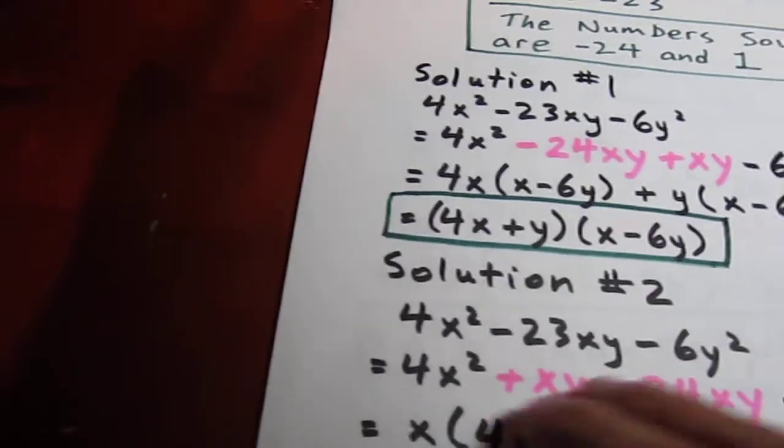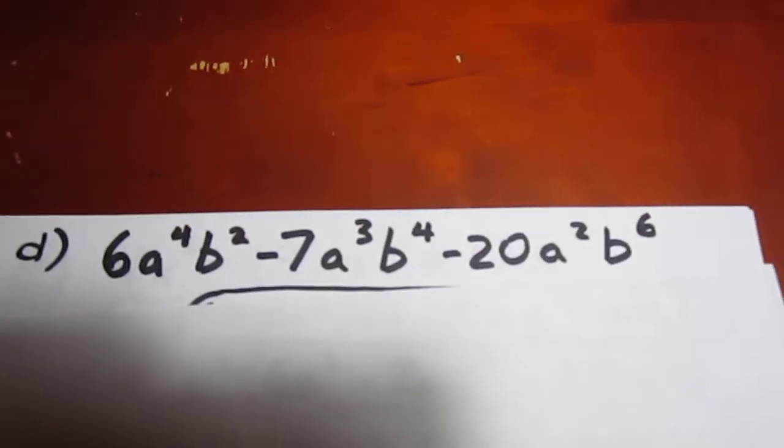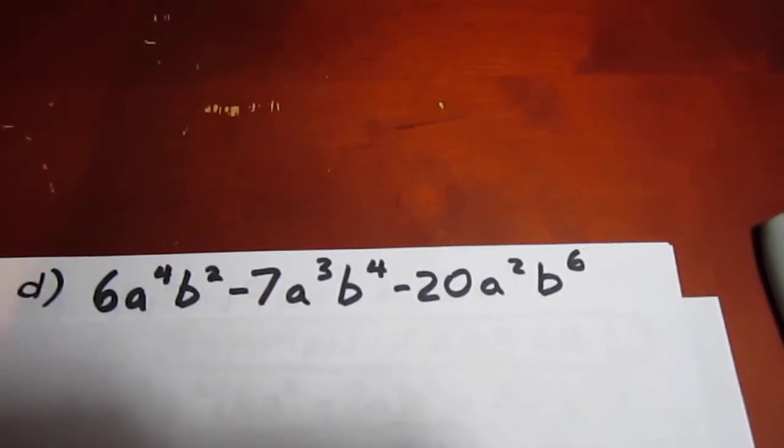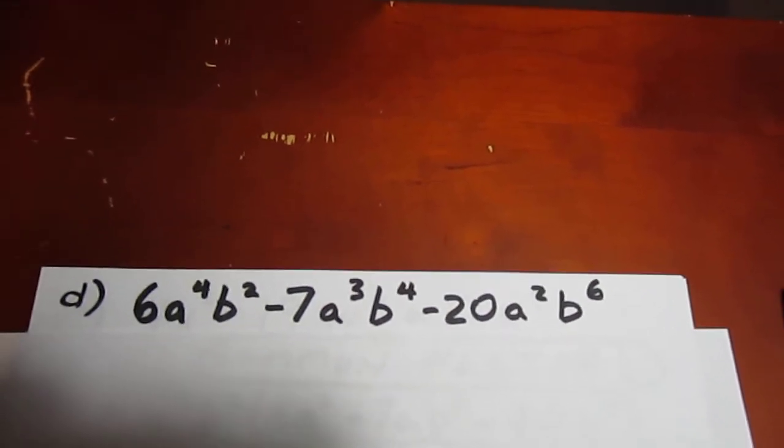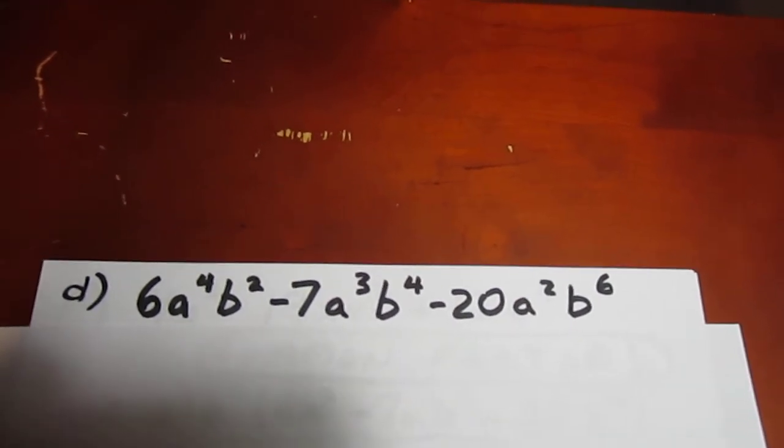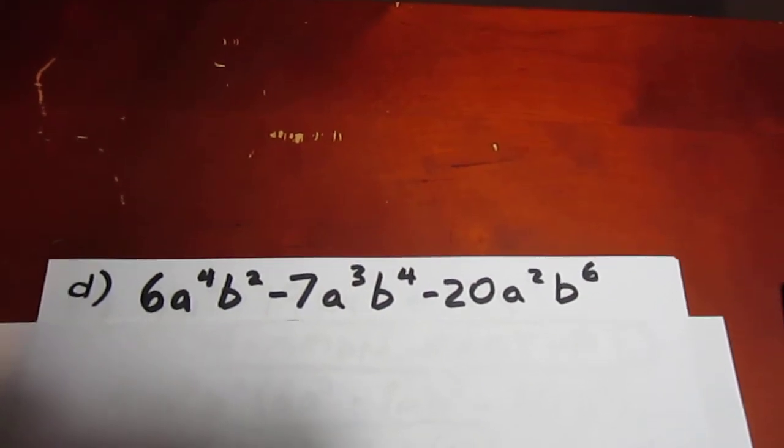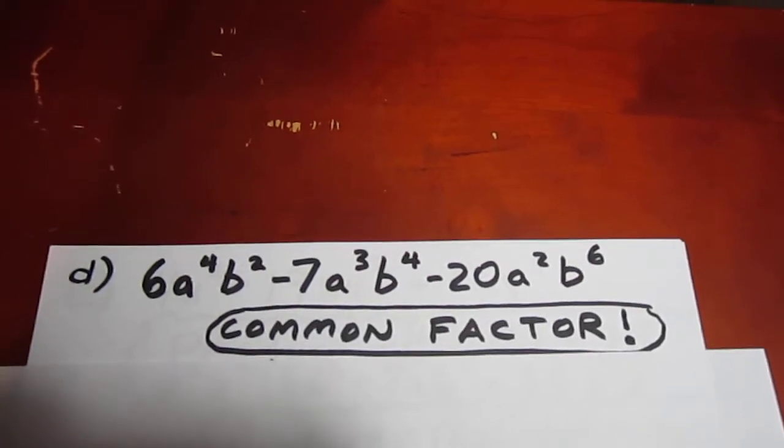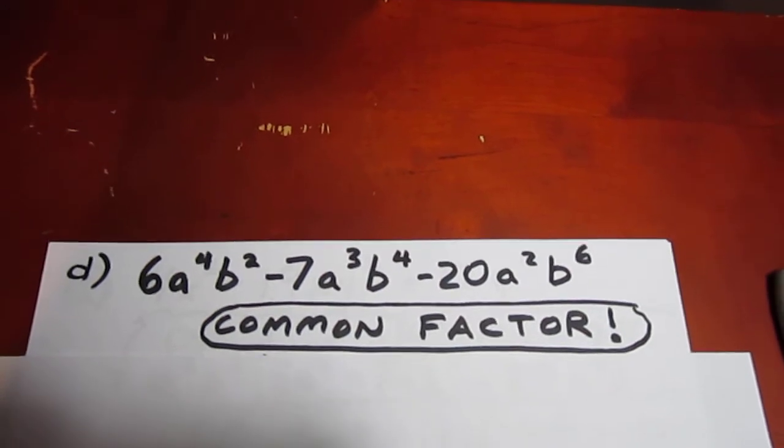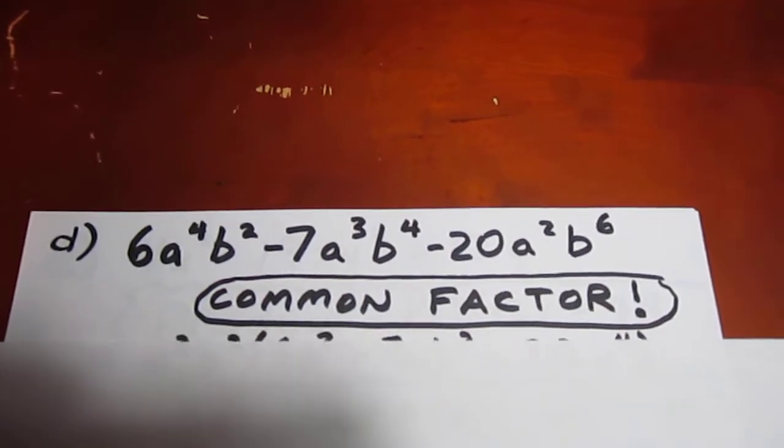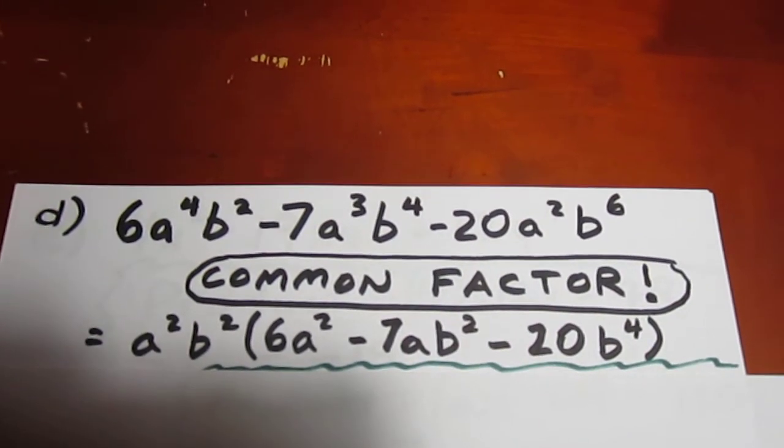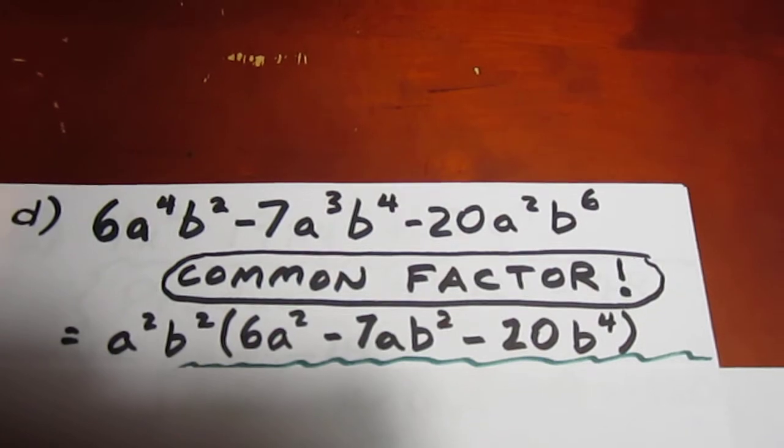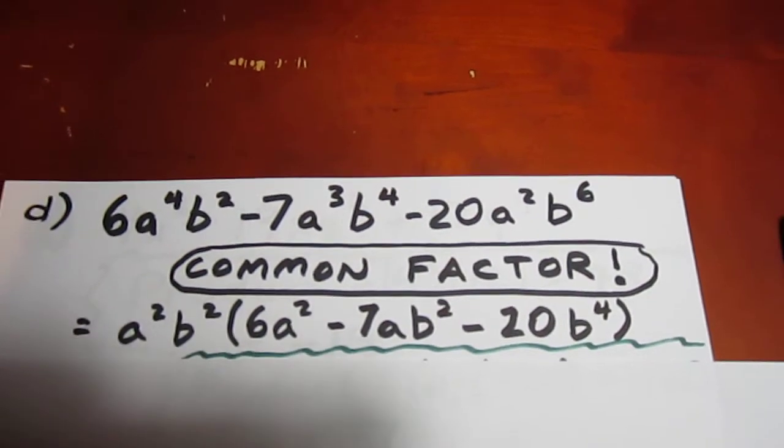And we get to this one. 6a⁴ - 7a³b⁴ - 20a²b⁶. We notice right away that we can common factor. Hopefully we do that. And this is a good time to emphasize the point that you should always try to common factor first. In this case, we can common factor. Specifically, we can common factor a²b² out of every term. That leaves us with 6a² - 7ab² - 20b⁴.